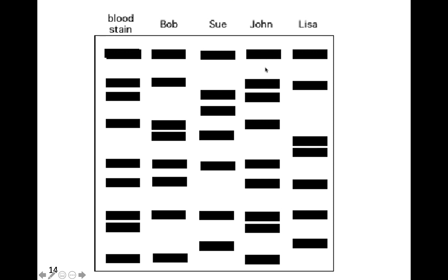This method is called RFLP — Restriction Fragment Length Polymorphism. It is the original method used for DNA profiling. They used this method from when DNA profiling began in 1986 all the way up until the early 2000s when they made an improvement. Next week we'll talk about that new, current method. But you have to understand this method first in order for the next one to make sense. That's why we started here. I hope you understood — if not, go back and review basic info on DNA and re-watch this. I'll talk to you again next week for our very last set of forensic science notes.